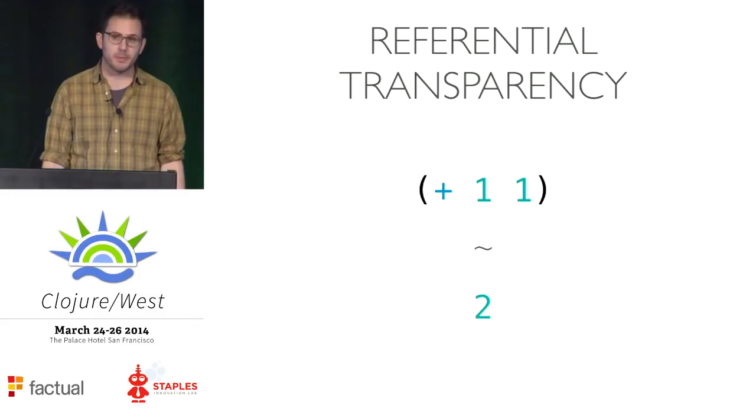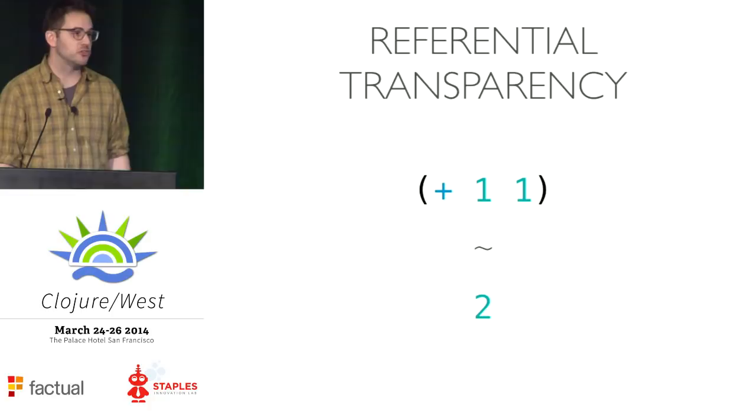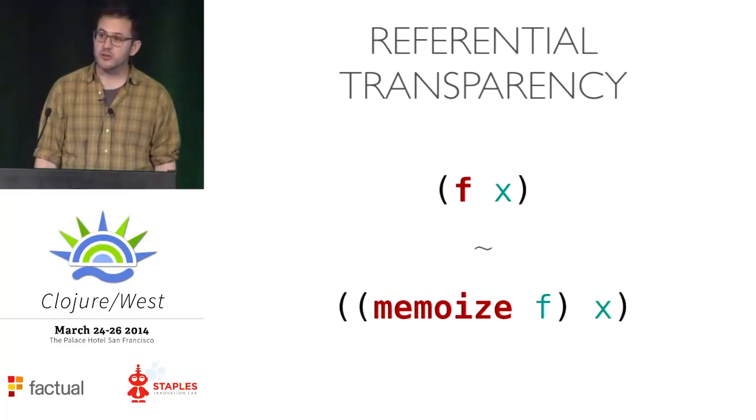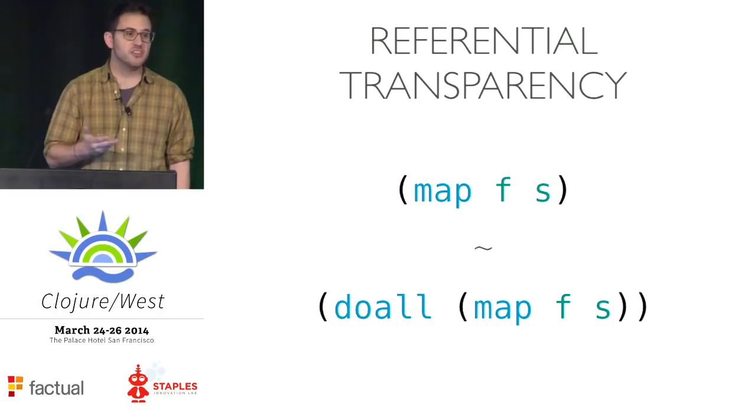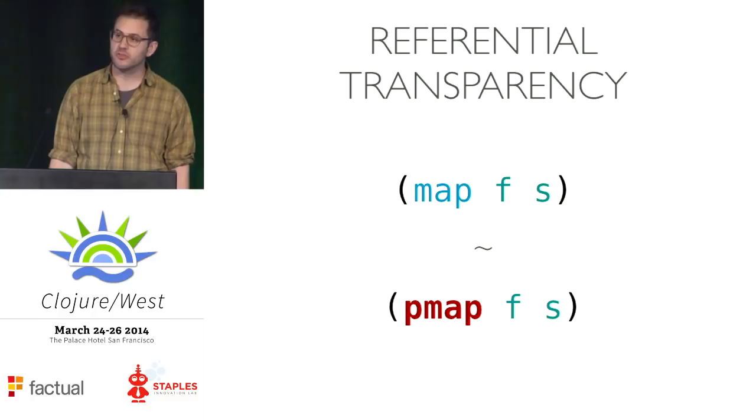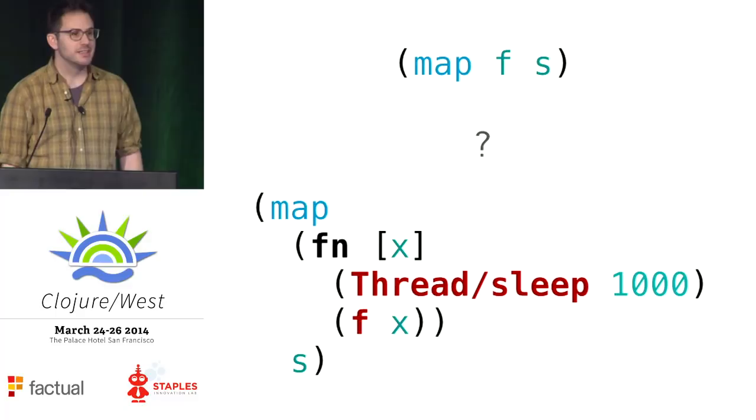And this isn't necessarily a bad thing. Referential transparency is a property that any expression can be replaced with the value it returns without changing the semantics of the program. We rely on this quite heavily. It means we can replace a function with a memoized version of itself, treat lazy and eager evaluation as interchangeable, and map over a sequence sequentially or in parallel. But what about these examples?